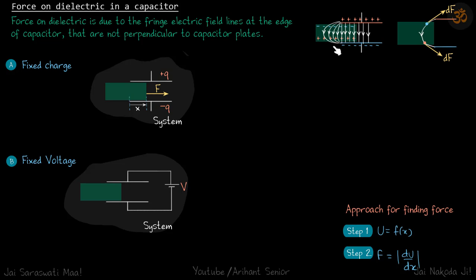Let's take one of these curved field lines and consider one negative charge and one positive charge induced on the dielectric. The field lines go from positive to negative terminal of the capacitor and are curved. The direction of the field lines is downwards, so the force on the negative charge will be upwards toward the right, and the positive charge induced at the bottom will be pulled inward. By symmetry the vertical forces cancel, and the net force on these two charges is toward the right.